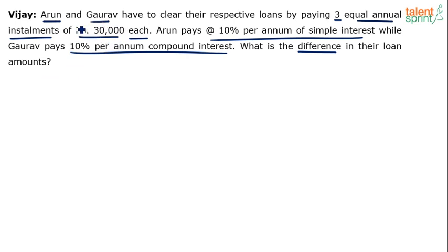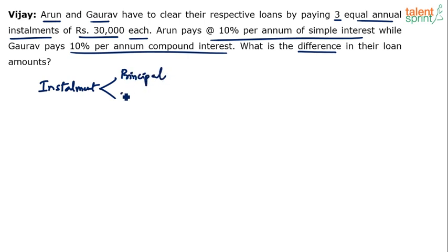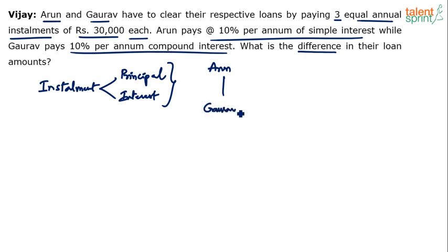Try to understand that when you break down this 30,000 rupees installment, it has two components: one is the principal amount — in each installment you are clearing some principal — and the rest is interest. Depending on how the calculation is done this can vary. The total duration is three years. For the sake of clear explanation I'm putting it up on paper.